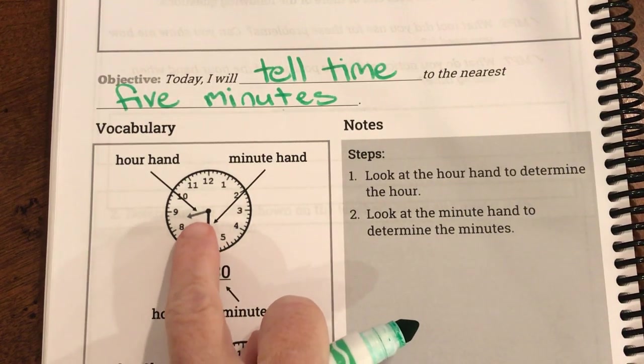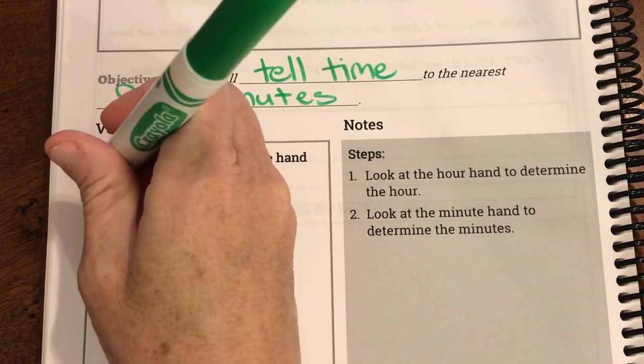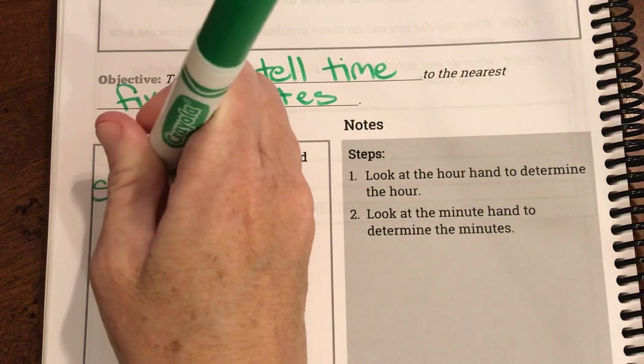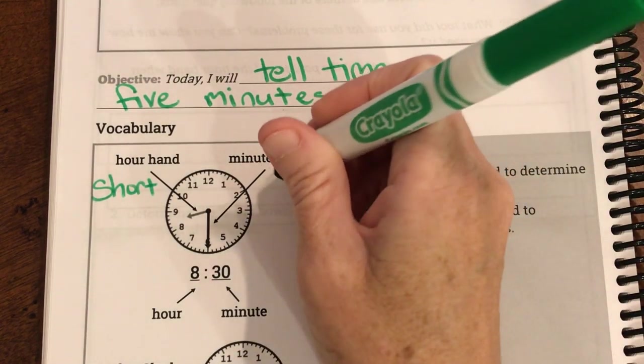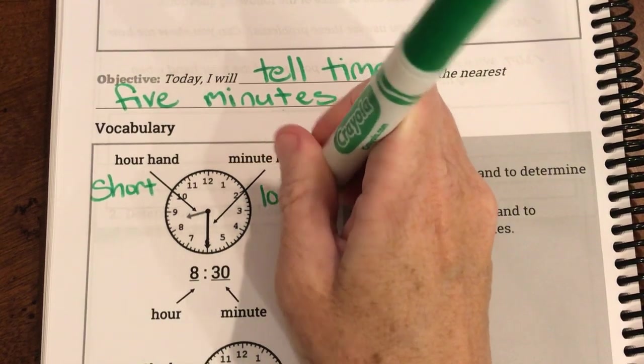The biggest difference is the hour hand is always the short hand. That's called my short hand. And my minute hand is my long hand.